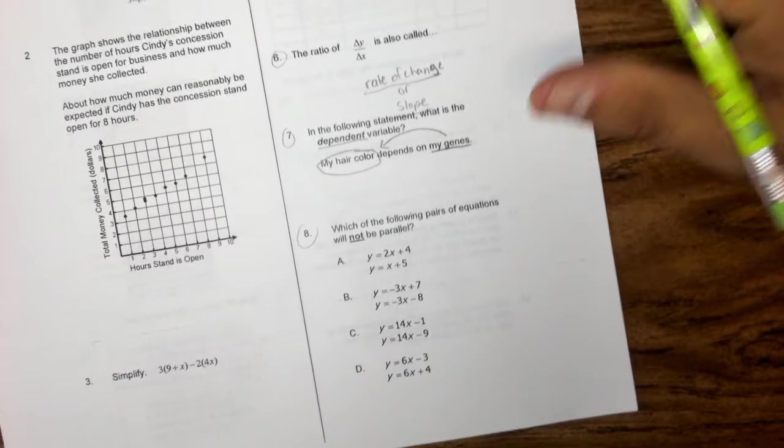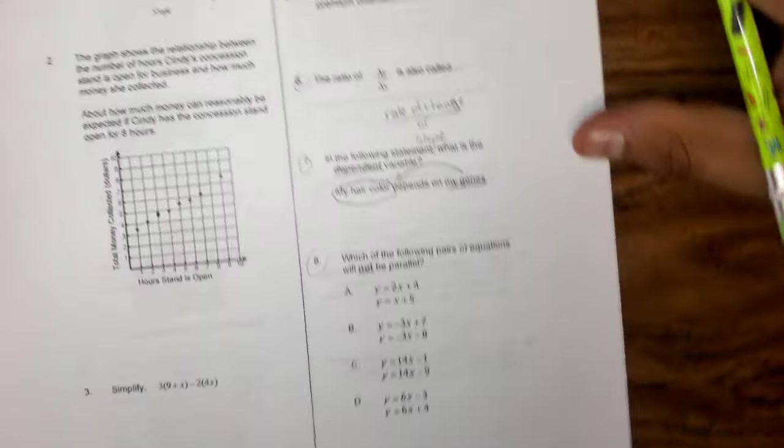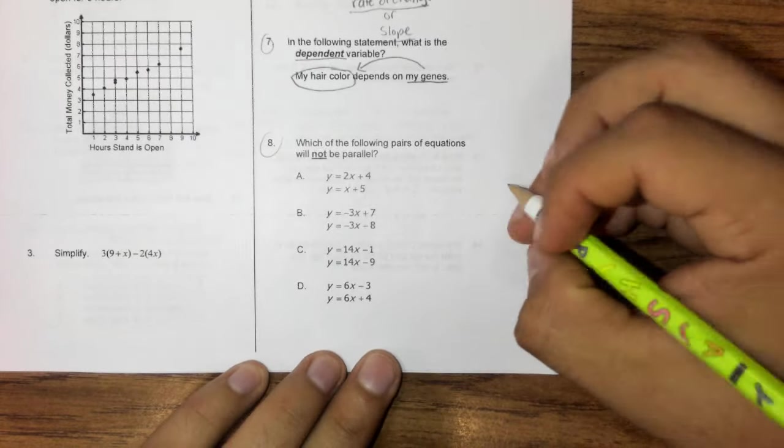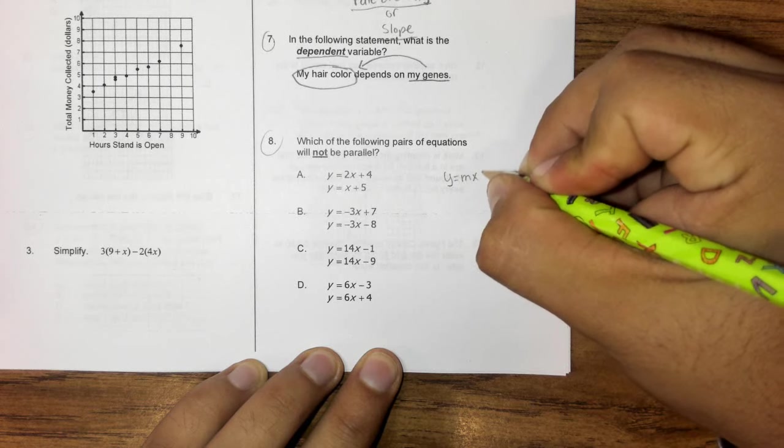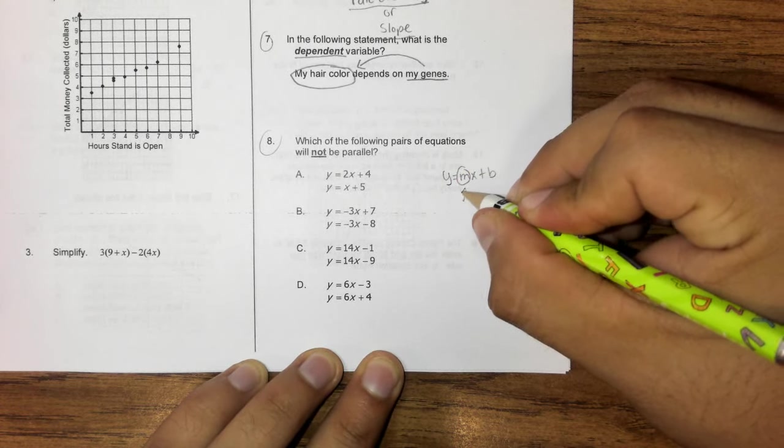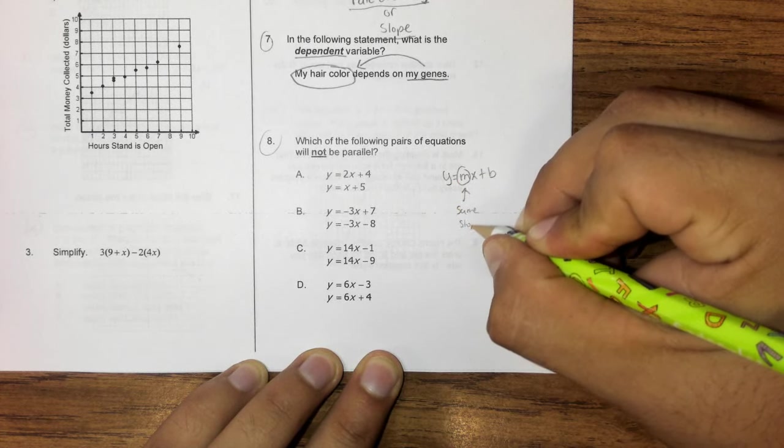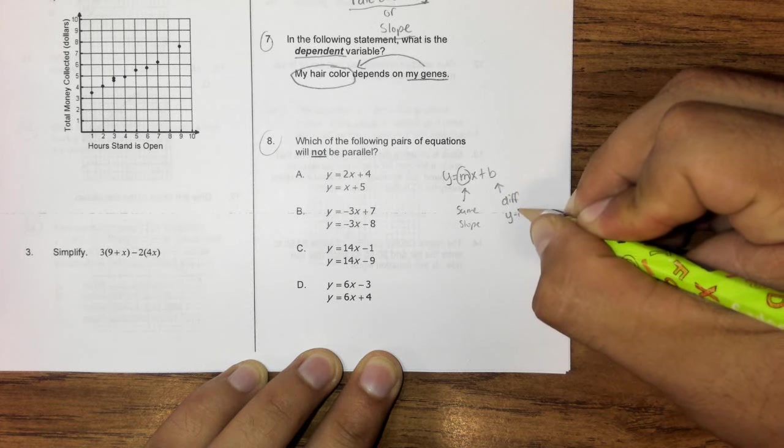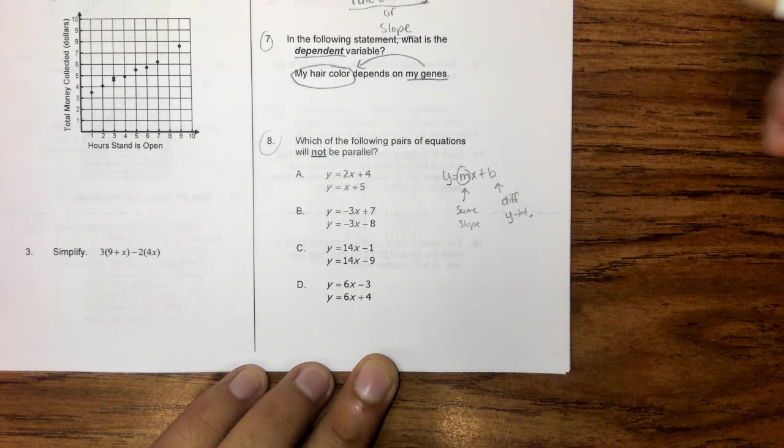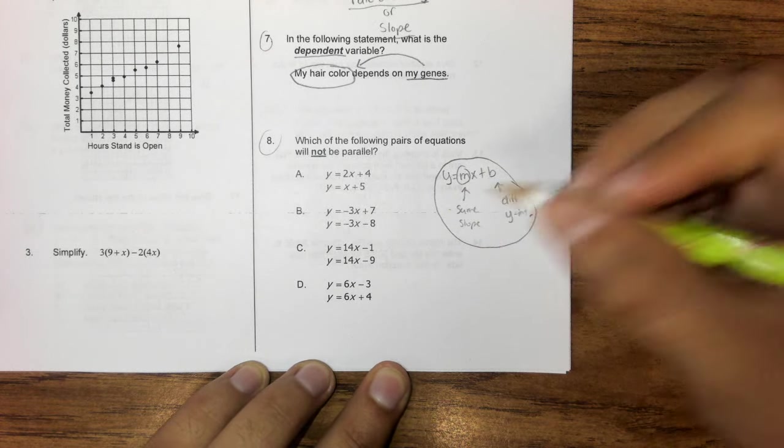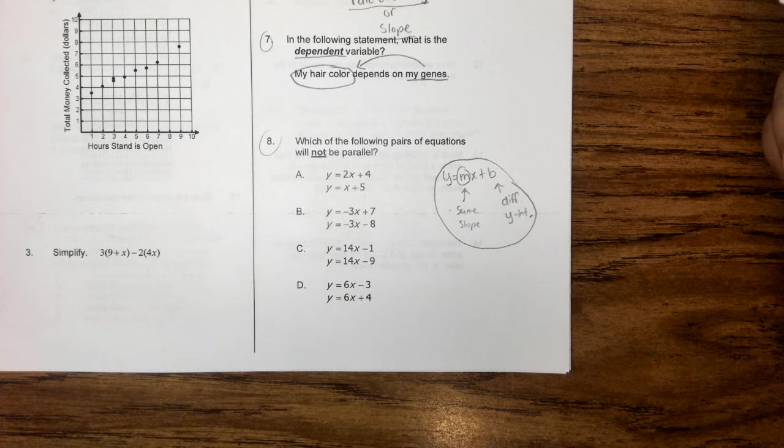Number eight, which of the following pairs of equations will not be parallel. So if we're talking about parallel lines, we're talking about same slope. So then we go back to y equals mx plus b. So my slope has to be the same, different y-intercept. And these are the two things that must happen. So that and that must happen for us to have parallel lines. And again, you can always graph these.